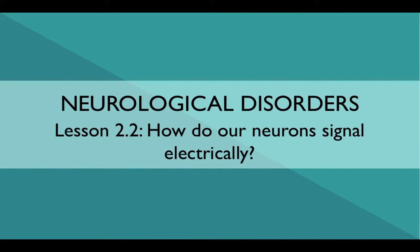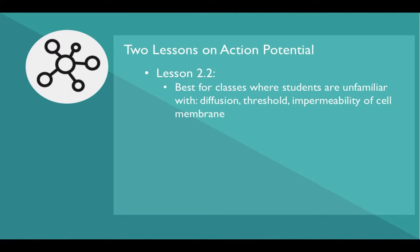Neurological Disorders Lesson 2.2 — How do our neurons signal electrically? This is one of two lessons that introduces the action potential. This lesson is best for classes where students are unfamiliar with the concepts of diffusion, threshold, and the impermeability of the cell membrane.